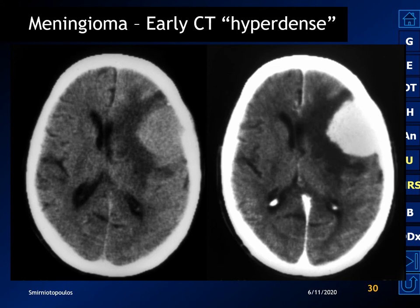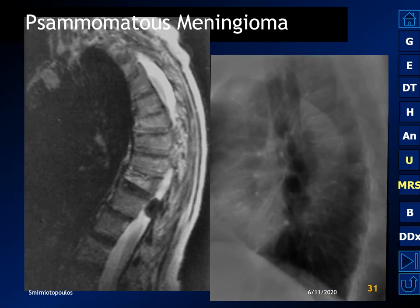In the early days of CT it was identified that meningiomas are hyperattenuating or hyperdense on the non-contrast scan. This is primarily due to the fibrous tissue, the vascularity, and occasionally from the presence of microscopic calcification. This also illustrates the overlying hyperostosis — a key and critical feature in identifying meningiomas.